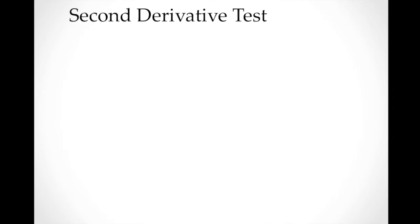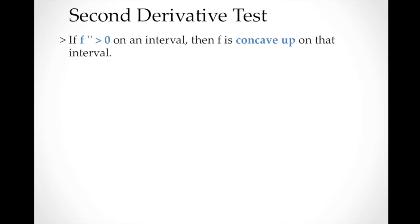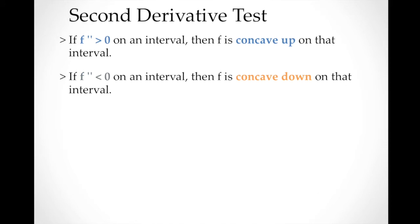We can also use the second derivative to determine whether a function's graph is concave up or concave down. If the second derivative is greater than zero (positive) on an interval, then f is concave up on that interval. On the other hand, if the second derivative is negative (less than zero) on an interval, then the function is concave down on that interval.